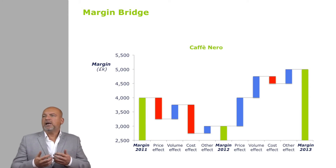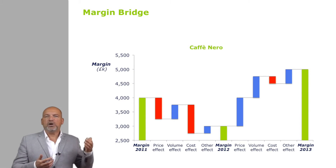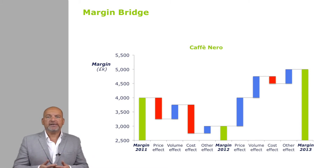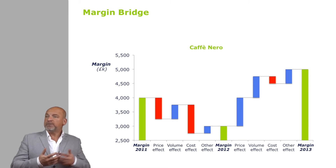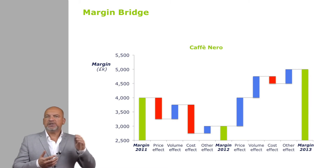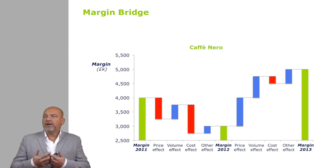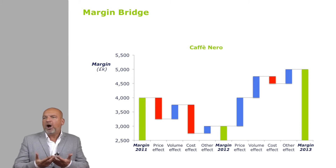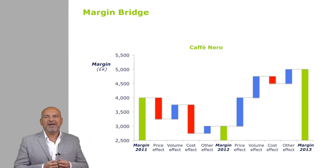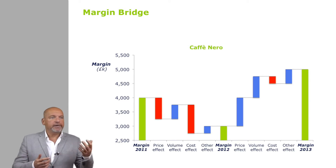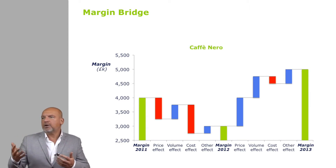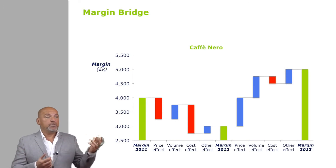In that particular example, you can see that price has probably gone down, which is why we lose margin due to lower prices. Volumes have gone up, which compensates and brings the margin back up. Costs have worsened — higher costs take the margin down. 'Others' typically covers things like currency fluctuations, where the currency you primarily trade in does well or poorly against currencies you purchase in, which impacts your margin.